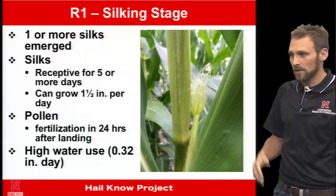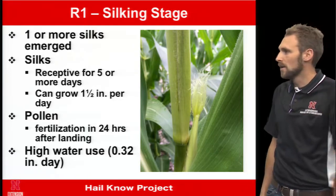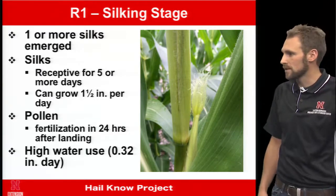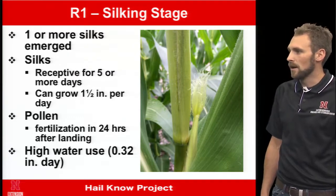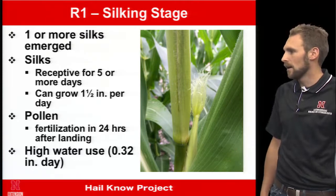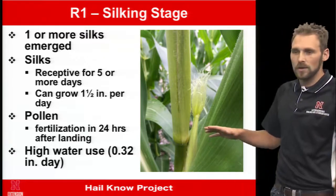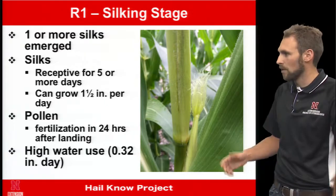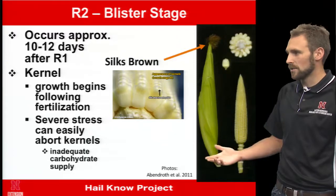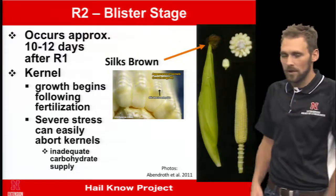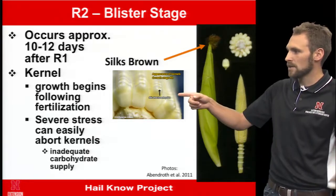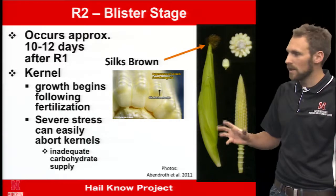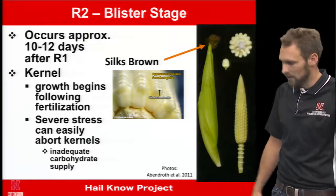Moving to reproductive stages: R1 is the silking stage, when one or more silks emerge from the plant. This is the most stressful time for corn and where you can see significant yield losses. Silks are receptive for a number of days and pollination happens fairly quickly. Hail at this stage and around tassel causes some of our most significant losses. R2, the blister stage, is about 10 to 12 days later — the silks have browned on the ear, and there are silk attachment scars for identification. Hail during this period will often deform ears if it hits directly.